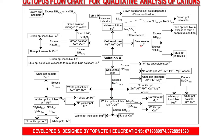That brings us to the end of the octopus analysis for cations. Remember, this is summarized on one page. Next, I'll take you through sample test questions on qualitative analysis testing both cations and anions, explaining the elimination method and contradictory ions. Keep watching, keep subscribing, and post any questions in the comment section. Until next time, bye-bye.